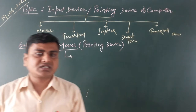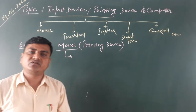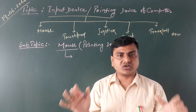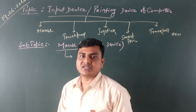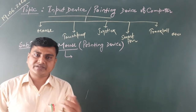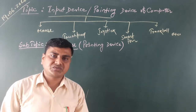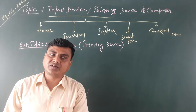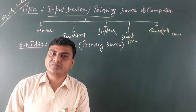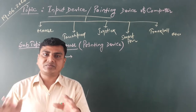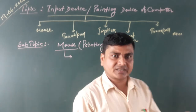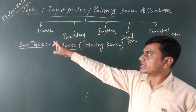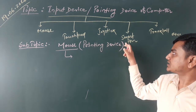Let me explain what an input device or pointing device is. All kinds of peripherals used to give instructions, commands, and other information to the computer are known as input devices. Among these, devices used to point out something on the computer screen and control the pointer are known as pointing devices. Popular pointing devices include mouse, touchpad, joystick, smartphone, and trackball.